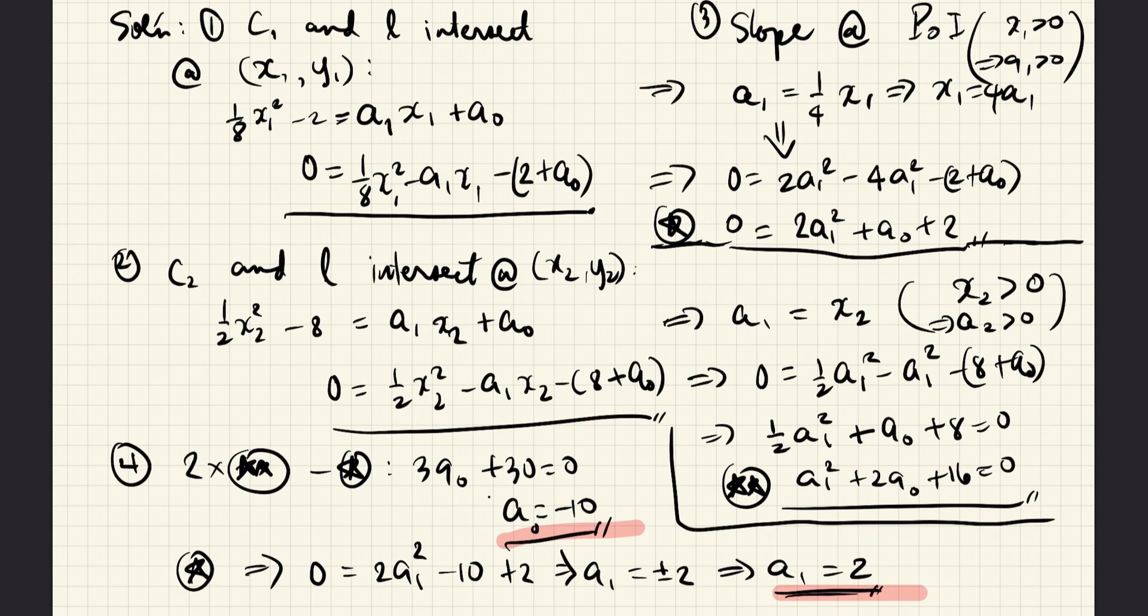First, let us find the point of tangency between C1 and L. Let us call the point of tangency x1, y1. The subscript 1 indicates that this is the point of tangency between C1 and L. We know that the equation for C1 is (1/8)x² - 2, and the equation for L is a1*x1 + a0. Therefore, at the point of tangency, this is satisfied. We can replace all the x's and y's with x1 and y1.